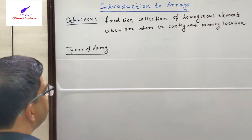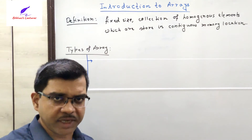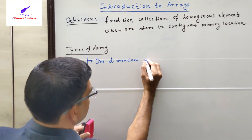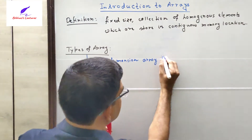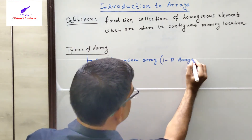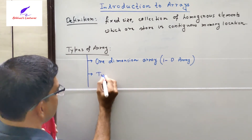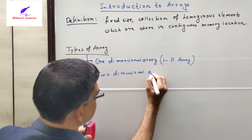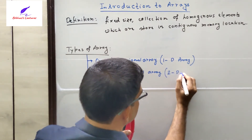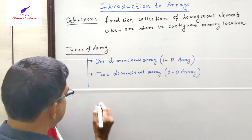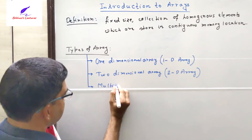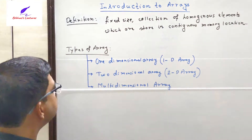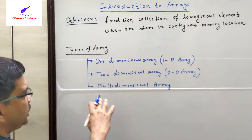The next point is: what are the types of arrays? Arrays can be broadly classified into three different categories. Number one is one-dimensional array, also called 1D array. The next one is two-dimensional array, also called 2D array. And the last one is multi-dimensional array. We are going to be familiar with each and every type of array one by one.